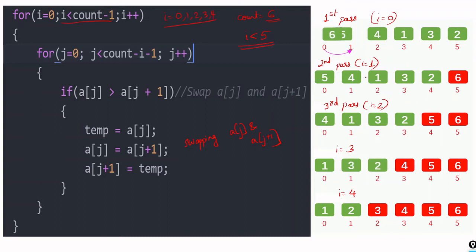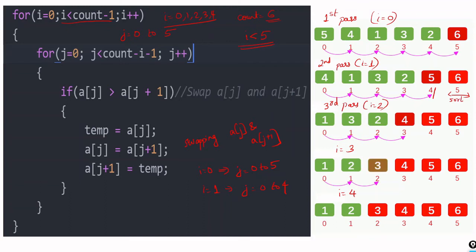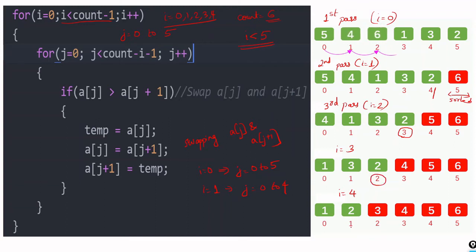In this example, i goes 0, 1, 2, 3, 4. In each pass when i equals 0, all elements have to be compared, so j goes from 0 to count minus i minus 1, that is j from 0 to 5. When i equals 1, j should be 0 to count minus i minus 1, that is 0 to 4. As i increases, the upper bound for j decreases because the rightmost elements are already sorted.